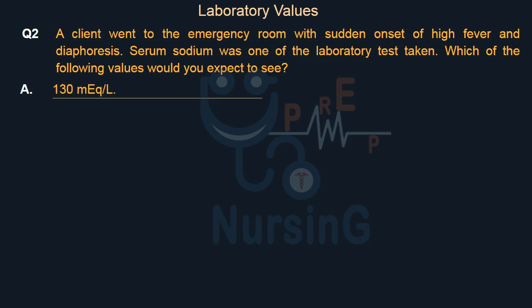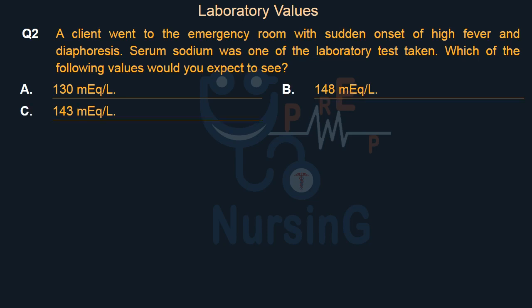Option A: 130 mEq/L. Option B: 148 mEq/L. Option C: 143 mEq/L. Option D: 139 mEq/L.